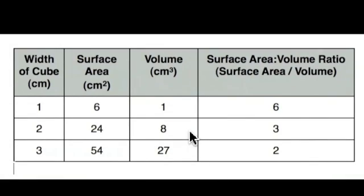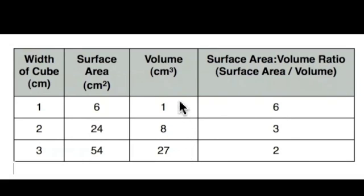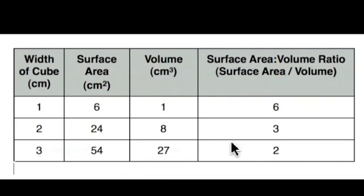As the size of the cell increases, so too does the surface area and volume. However, notice that the volume of the cell increases faster than the surface area when a cell grows, therefore decreasing its surface area to volume ratio.